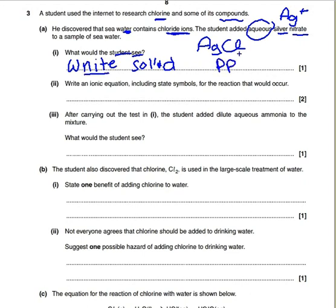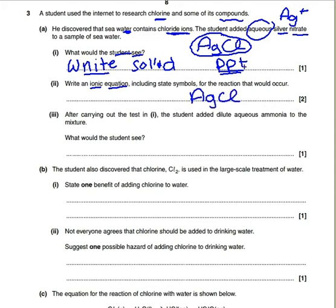Next, we write an ionic equation including state symbols for the reaction that occurred. An ionic equation is asking how do you make the precipitate - how do you make the silver chloride. We've got two marks: the first is for the reaction. We're making AgCl, and we said it was a precipitate, a white solid, so we put it as solid. We're only interested in the formation of silver chloride, not the other ions present.